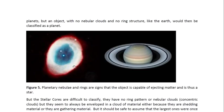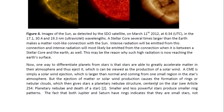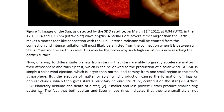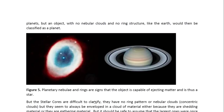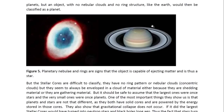These are nebular clouds produced by the star itself, which is at the center of the clouds, produced due to the star's own solar wind. It ejects matter outwards from the star itself. You might look at article 254 entitled 'Planetary Nebula and Death of a Star' for more details on that. Smaller and less powerful stars produce smaller ring patterns. The fact that both Jupiter and Saturn have rings indicates that they are small stars, not planets. But an object with no nebular clouds and no ring structure, like the Earth, would be classified as a planet.